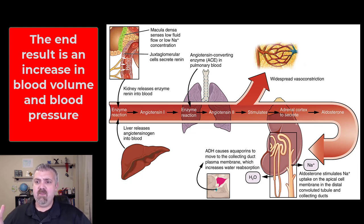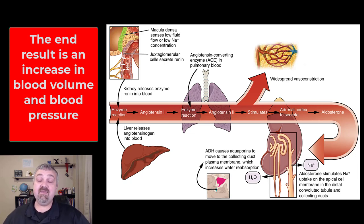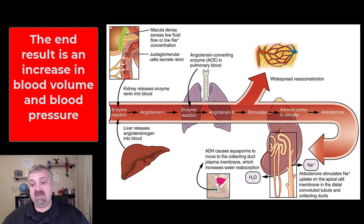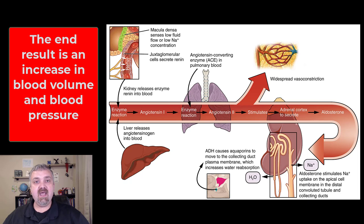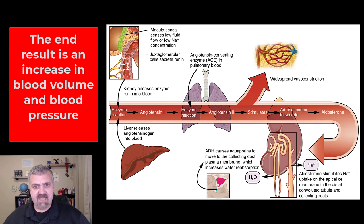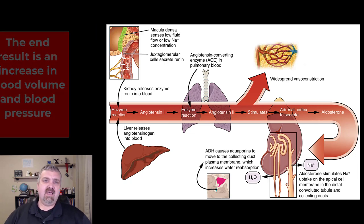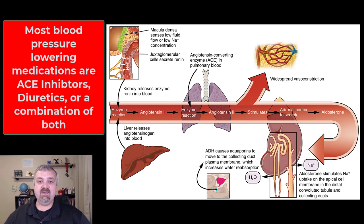Here's the problem though: we now live in a time where low blood pressure is rarely an issue compared to high blood pressure. Our ancestors may have had blood pressure around 100 over 60, making low blood pressure more likely. But now, because we weigh more and are less physically active, high blood pressure is a much bigger concern — and we don't really have major systems that can bring blood pressure down on their own.